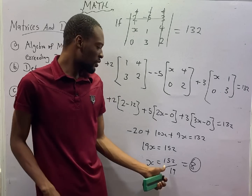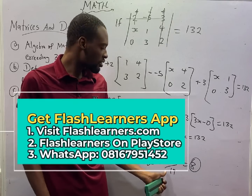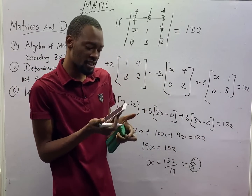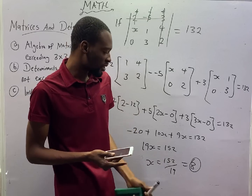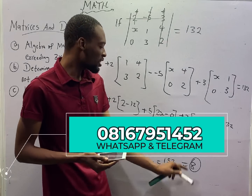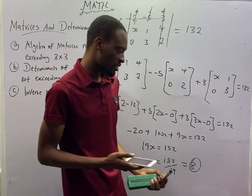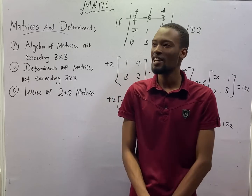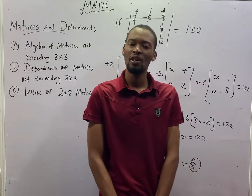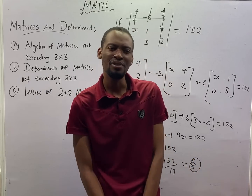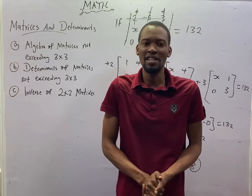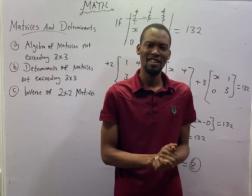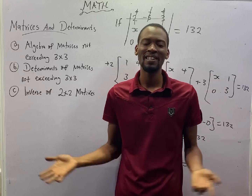Look at this: in JAMB, there is no calculator. If you already arrive at 152 over 19 and you see options like 5, 8, 3, and 6, use each answer to multiply the denominator — whichever gives you the numerator is the correct answer. With this, we come to the end of matrices and determinants. See you in the next episode, where we shall be introducing geometry and trigonometry — it is going to be very interesting. Brace yourself up for the class, and please get the Flash Dener Jam application to practice further questions on matrices.